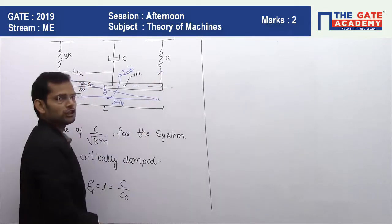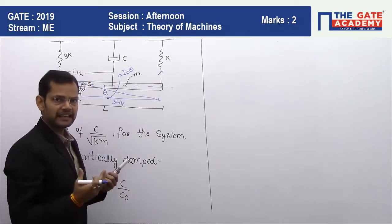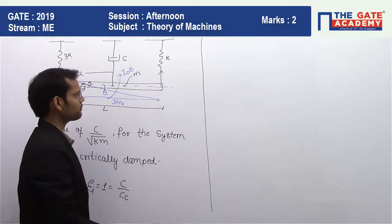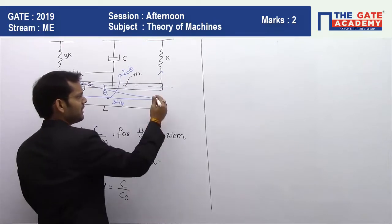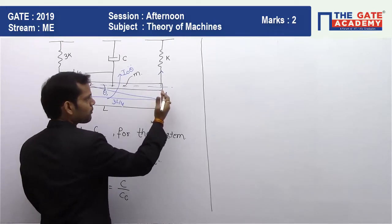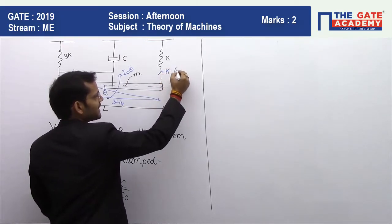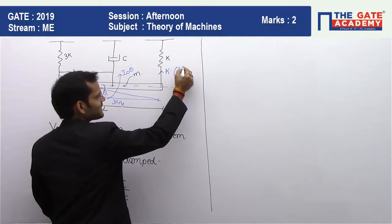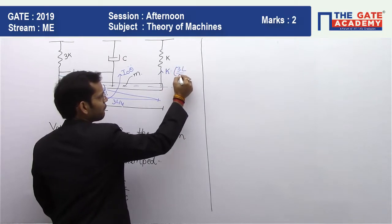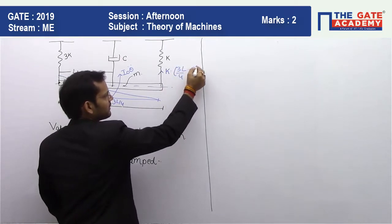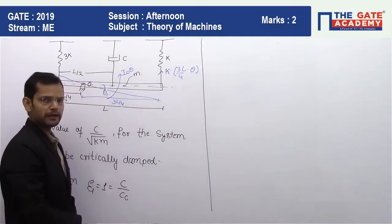The spring force value is simply k multiplied by the stretch of the spring. The stretch of the spring equals k multiplied by 3L/4 multiplied by theta. This is our spring force for the first spring.